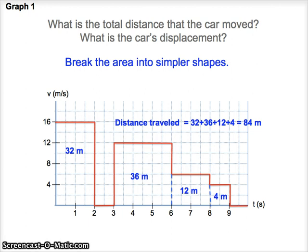Now in this case, the distance traveled and the displacement are the same thing, because this object only moves in the positive direction. All of the velocities are positive, none are negative.